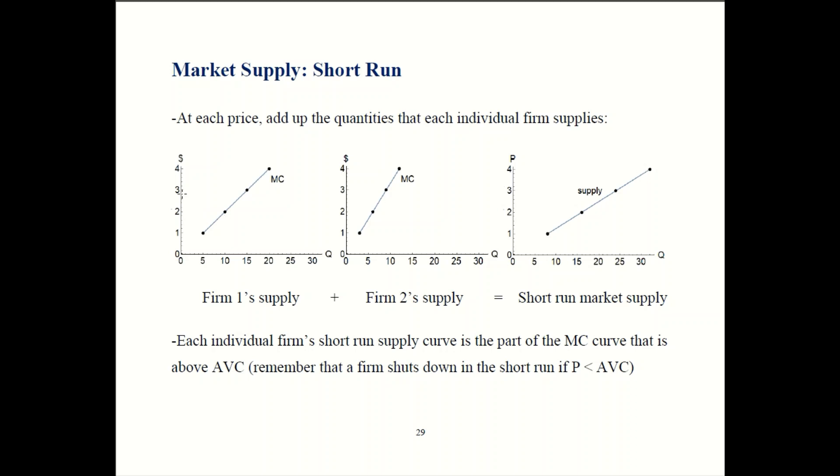If price were to fall to three, then firm one's going to provide fifteen. Firm two provides about ten, so fifteen plus ten is twenty-five. That means the market is supplying a total of twenty-five units. Same is also true for the other points. If price is two, then firm one provides this much, firm two provides that amount, so you add it together you get the market supply.